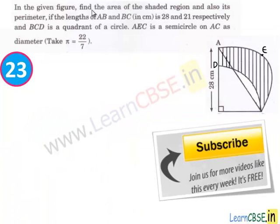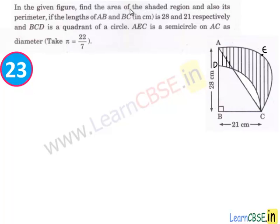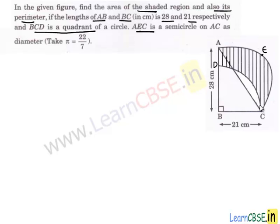Let's move to the next question. In this question we are given a figure and we have to find the area of the shaded region and also its perimeter. Here the lengths of side AB and BC are 28 and 21 cm respectively. Here BCD is a quadrant of a circle and AEC is a semicircle by taking AC as diameter.